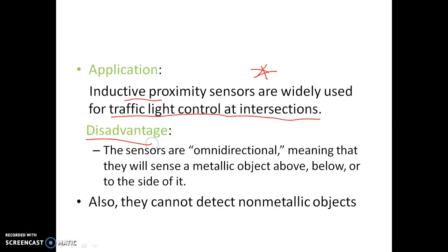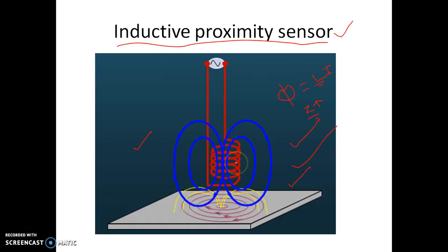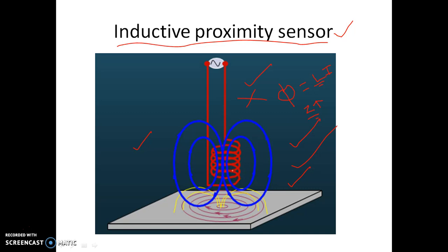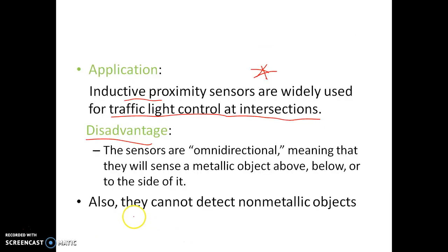Some disadvantages: the major disadvantage of this sensor is that it will work only for metallic substance identification. Suppose a plate is non-metallic — then obviously eddy current will not be produced, so the sensor will not work in that case. To identify an object or get an idea of its closeness, the condition must be satisfied that the substance must be metallic. This is the major disadvantage — they cannot detect non-metallic objects, because in non-metallic objects eddy current never generates.